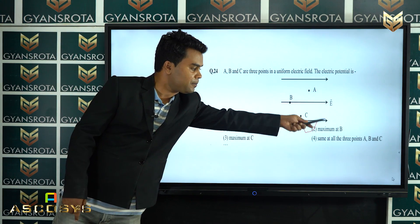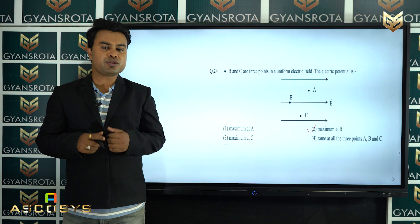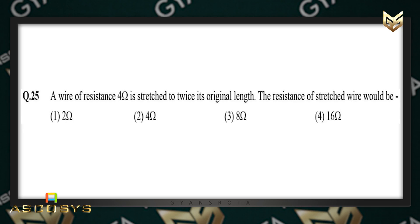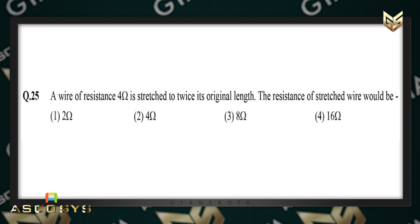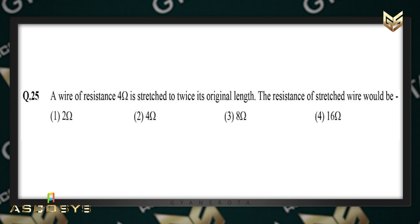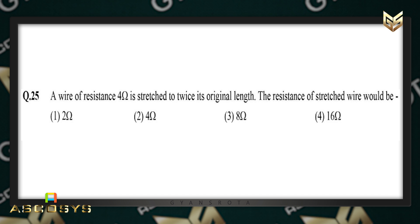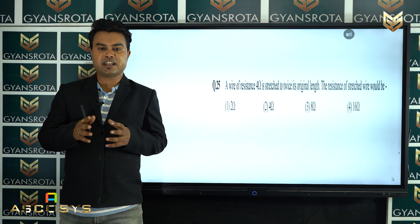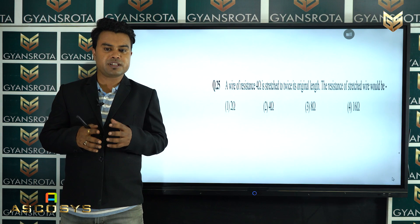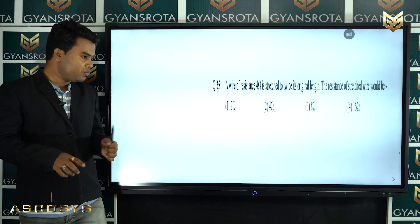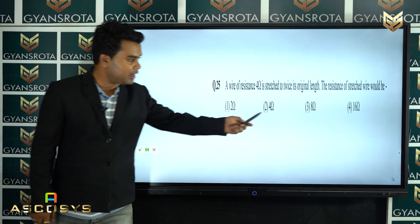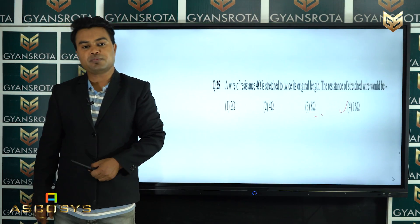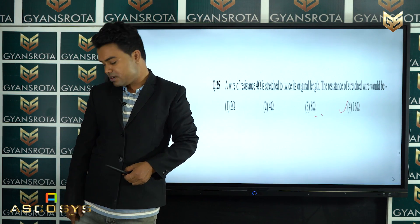Question 25: a wire of resistance 4 ohm is stretched to twice its original length. Since resistance R is directly proportional to l², stretching to twice the length gives R' = 4 × 4 = 16 ohm. So 16 ohm is the correct answer.